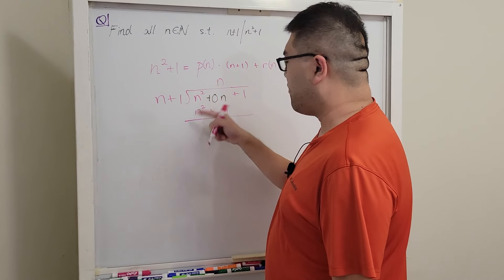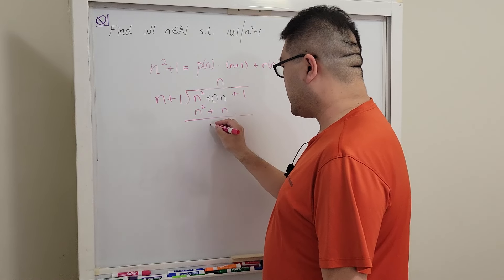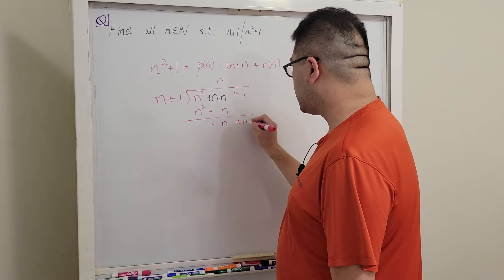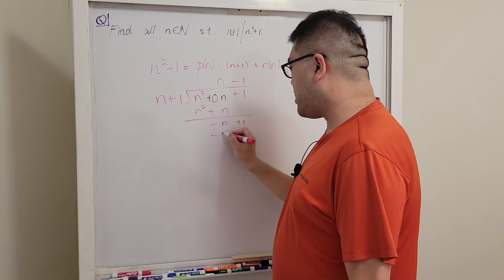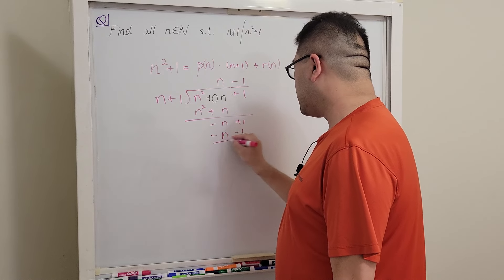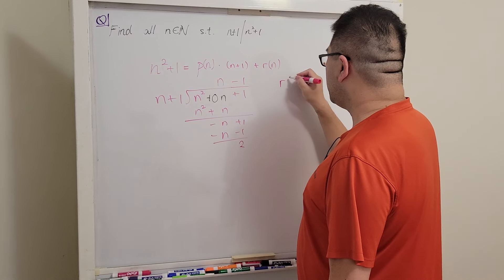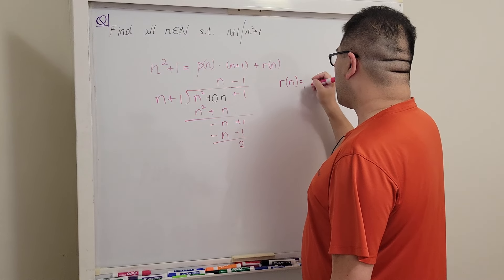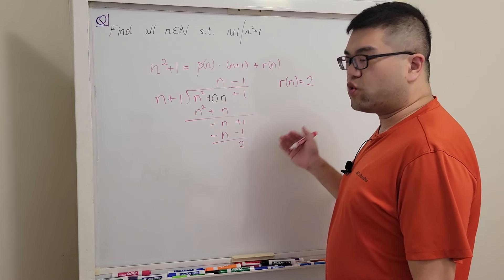If we multiply this with n we will get n squared plus n, so that the first term or the largest term will be able to cancel out. Then if we subtract it we'll get this. In this case, in order to cancel the negative n, we have to multiply with negative one to get the remainder to be 2. So after the long division we have r of n is equal to 2 as the remainder.